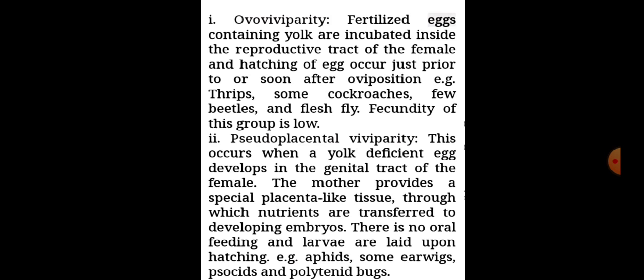Viviparity has several types. First is ovoviviparity: fertilized eggs containing yolk are incubated inside the reproductive tract of the female, and hatching of the egg occurs just prior to or soon after oviposition. Examples: thrips, some cockroaches, few beetles, and flesh fly. Fecundity of this group is low.